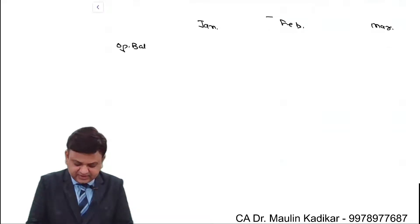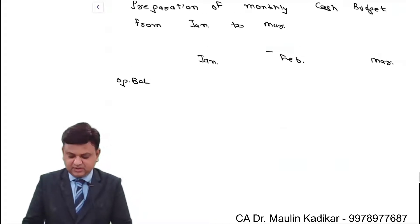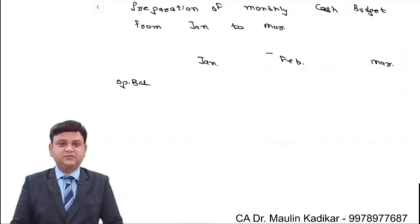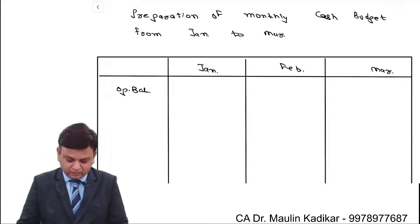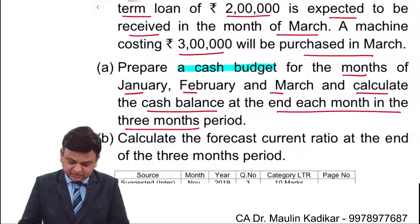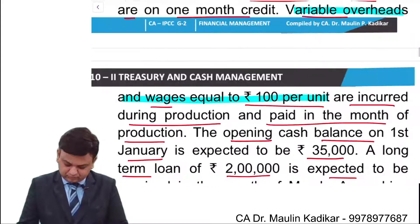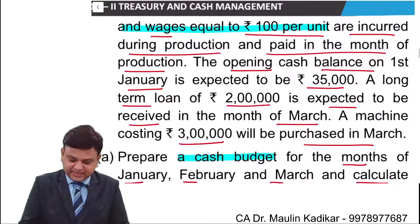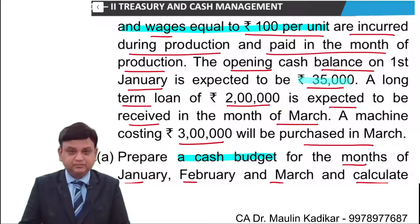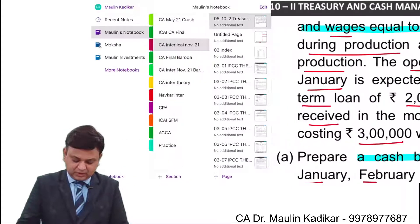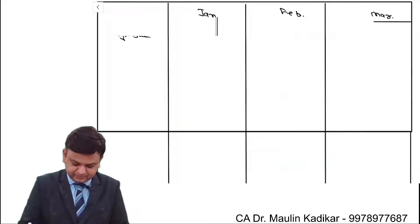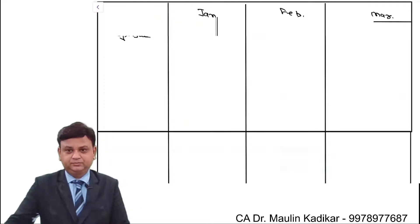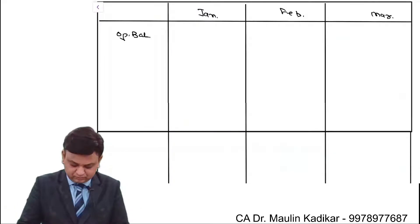We always start with the opening balance and then keep further information. The opening balance for the month of January is provided as 35,000 rupees.